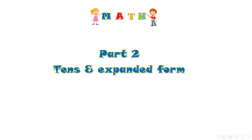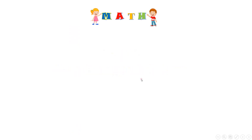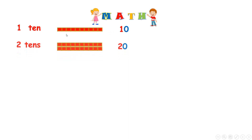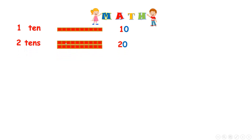Part 2: 10s and Expanded Form. Now you know that this shape means we have 1 ten. And 1 ten is made of 10 little squares. So 1 rod is 1 ten. This is 1 ten. 2 tens — 10 and 10 — it's 20. Great!